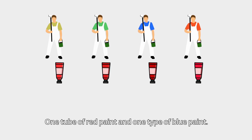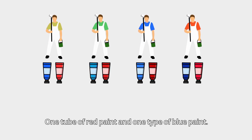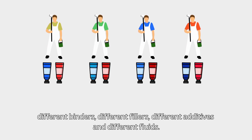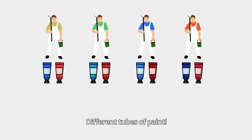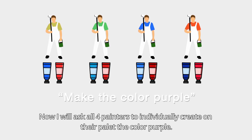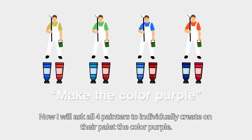One tube of red paint and one tube of blue paint. All these paints have different manufacturers. They have different binders, different fillers, different additives, and different fluids — different tubes of paint. And I ask all four painters individually to create on their palette the color purple.